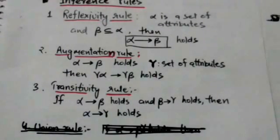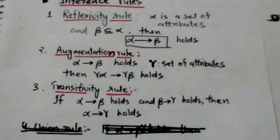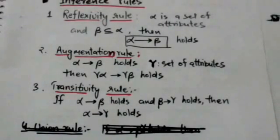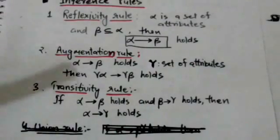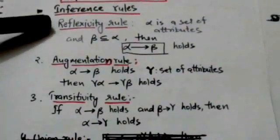If F is a set of functional dependencies specified on relation schema R, then the closure of F can be determined from F by using only these three rules.